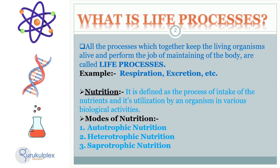Autotrophic nutrition, commonly referred to as self-feeding, is when organisms produce their own supply of nutrients from raw materials like carbon dioxide, water, and sunlight. Heterotrophic nutrition is when organisms obtain their nutrients from other sources like plants or animals. Saprotrophic nutrition is when organisms break down and absorb nutrients from decaying organic matter. All of these processes work together to maintain our body and keep us alive.